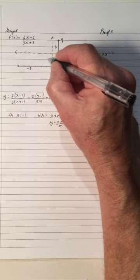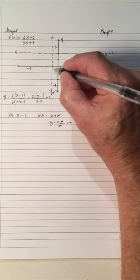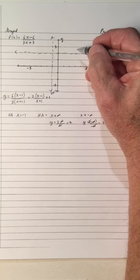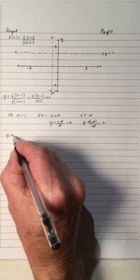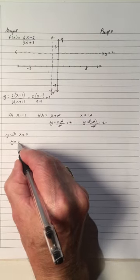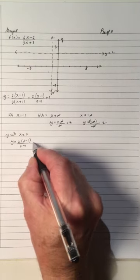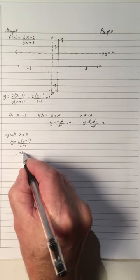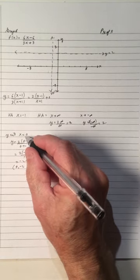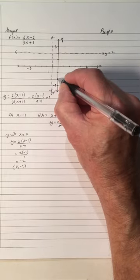The vertical asymptote is at x equals negative 1 — right there. The horizontal asymptote is y equals 2. The graph cannot cut through the vertical asymptote. It could go like this, or like this, or come down here. Let's find the y-intercepts and x-intercepts to help us figure that out. The y-intercept is when x equals 0: 2 times (0-1) over (0+1) equals 2 times negative 1 over 1, which is negative 2.